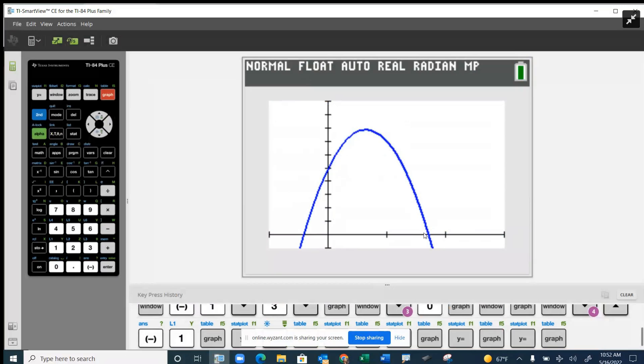Okay, and so since we're looking for how long it takes for the ball to hit the ground, we're in other words looking for an x-intercept. So that would be our solution, about one and two-thirds seconds.